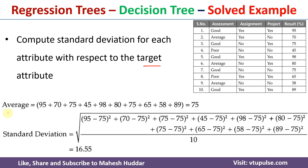To calculate the standard deviation, first we need to calculate the average. We will add all these values and divide by 10, giving us an average equal to 75. The standard deviation is equal to the square root of the sum of (each value minus the mean) squared — for example, (95 − 75)² + (70 − 75)² and so on through (89 − 75)² — divided by 10. Solving this equation gives a standard deviation of 16.55 for the whole data set.